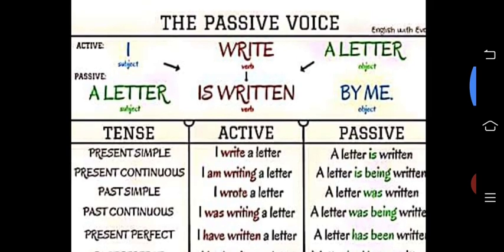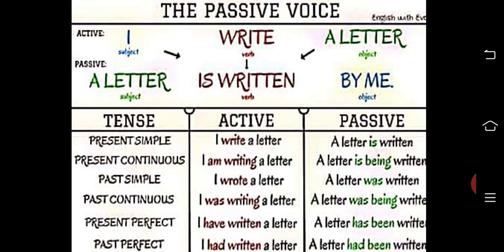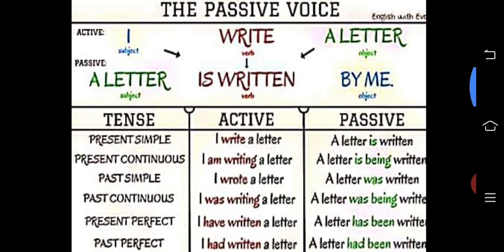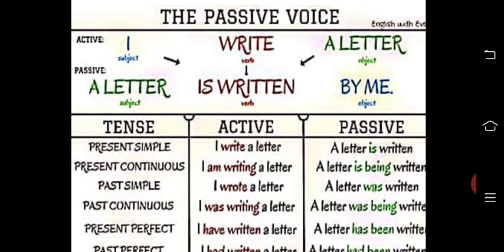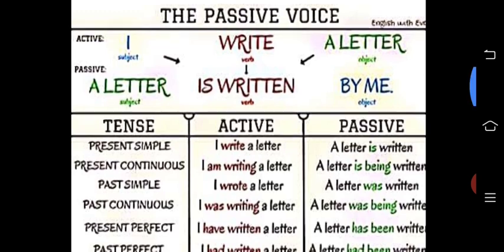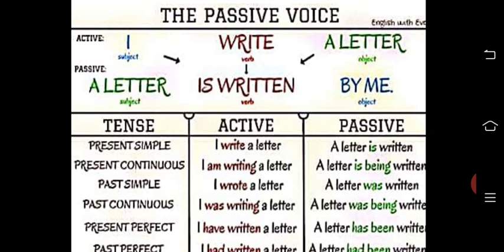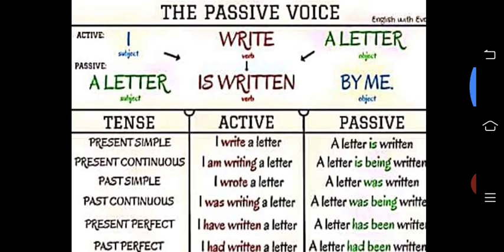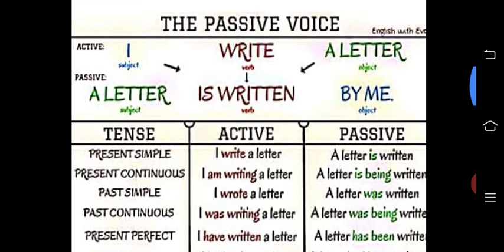So, passive voice — I have given a chart here for active to passive. For example: 'I write a letter.' Here, 'I' is the subject, 'write' is the verb, and 'a letter' is the object. In passive, we convert the object into the subject: 'A letter is written by me.' This is the basic pattern we have been using from lower classes. You should know that totally we have 12 tenses, but in active to passive we use only 8 tenses, not all 12.